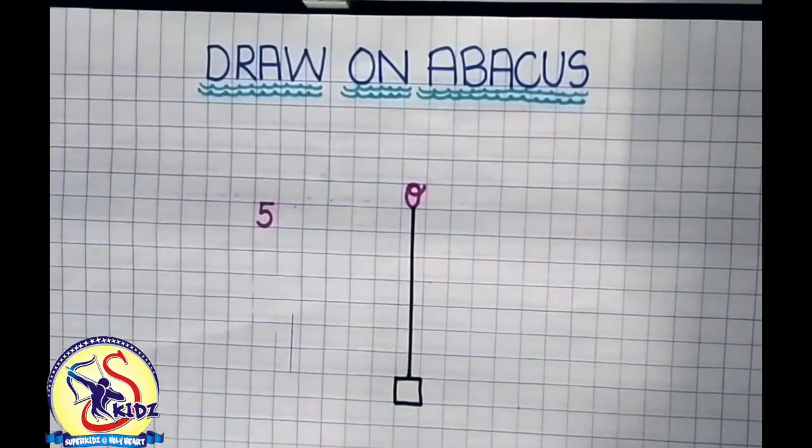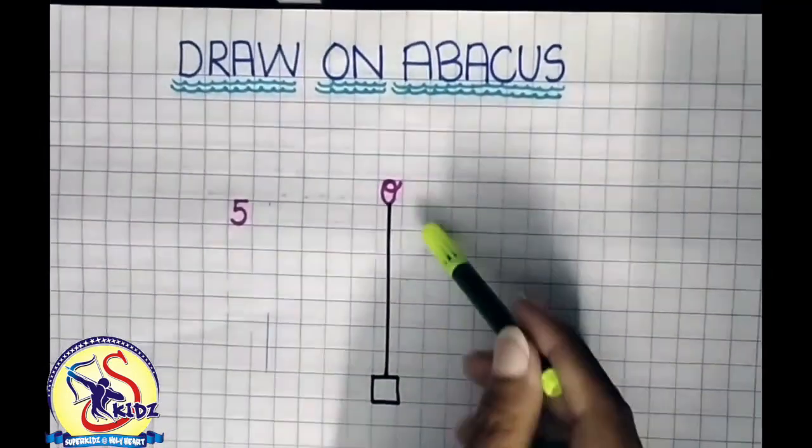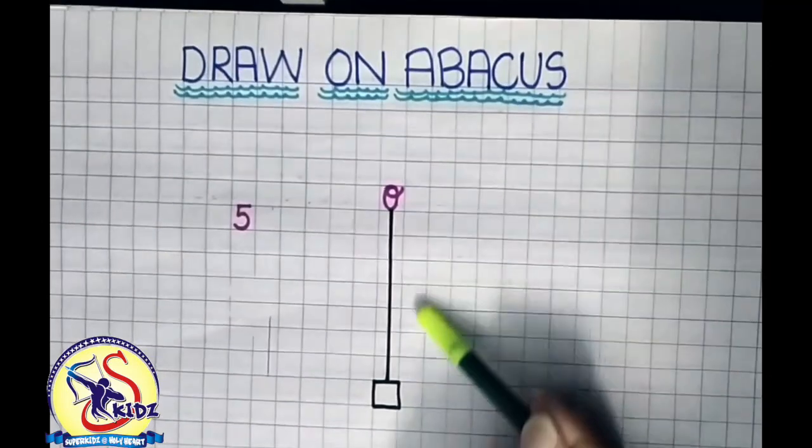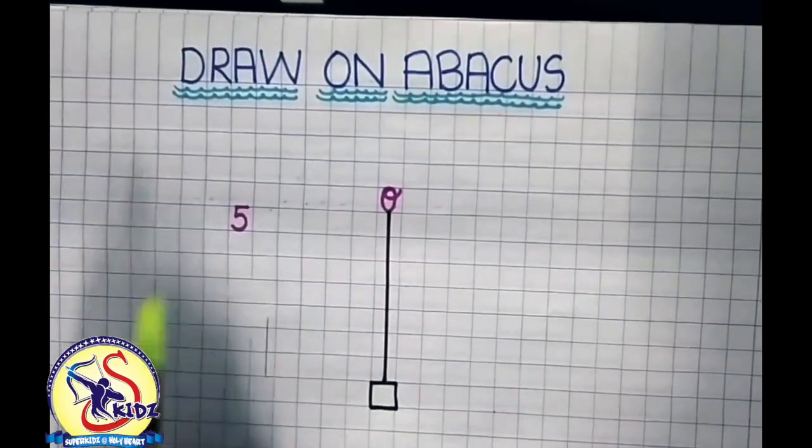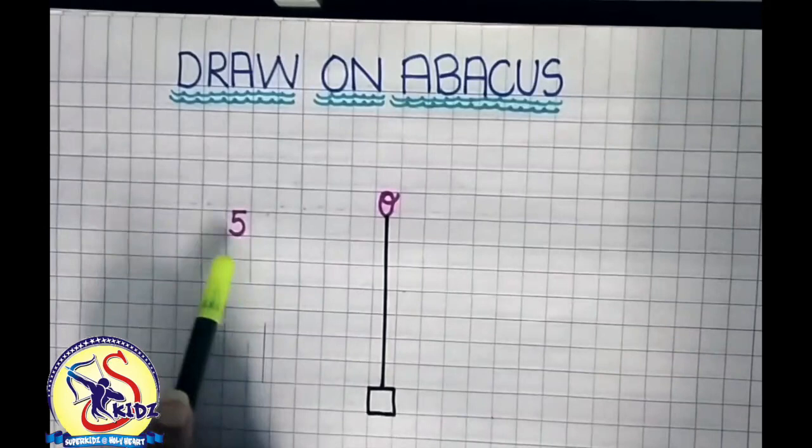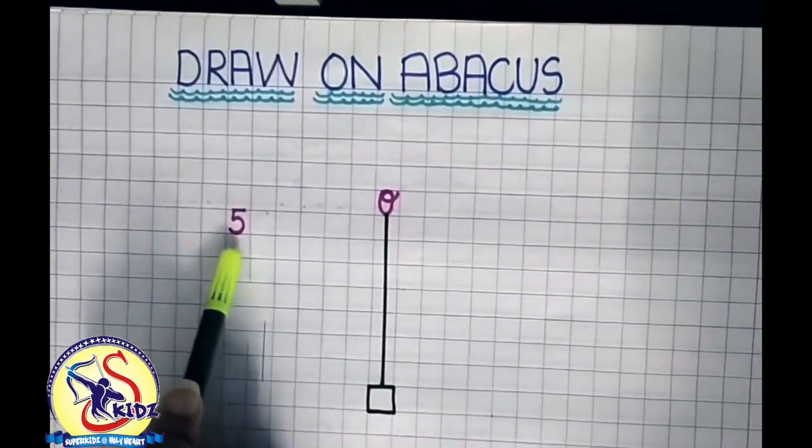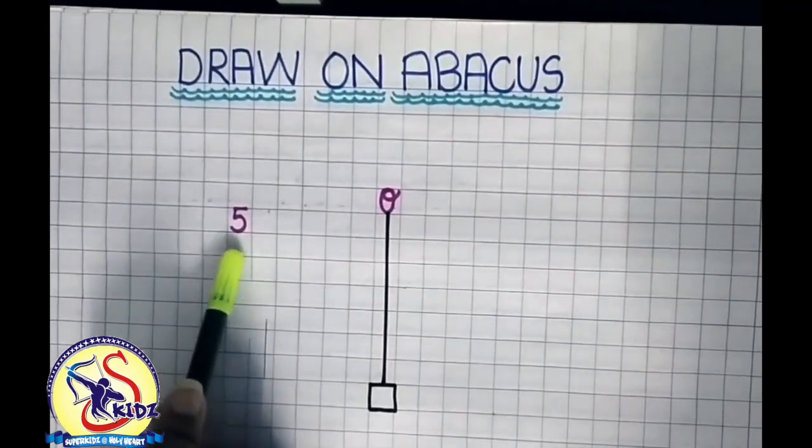In this topic, this is the road and this is the box. Now let's see which number is this. This is number 5.